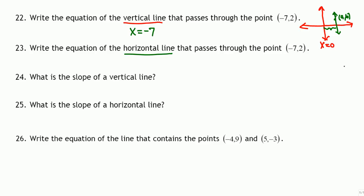For a horizontal line, slope is 0. If we know the line passes through point a comma b, then this distance is b — the y-distance is b. So for a horizontal line, the equation is y equals the second coordinate. In this case, y equals 2.